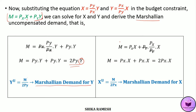Similarly we can solve for the Marshallian demand for good x. In the budget constraint we substitute the expression for y. So m equals Px times x plus Py times Px by Py times x. Here Py and Py cancel, giving m equals Px times x plus Px times x, which equals 2Px times x. Solving for x we get x equals m divided by 2Px. This is the Marshallian demand for good x.